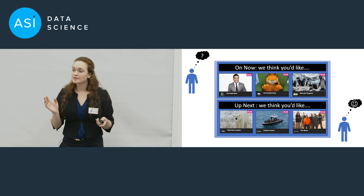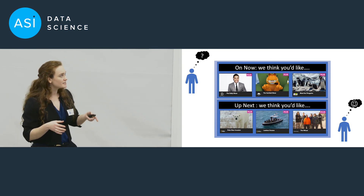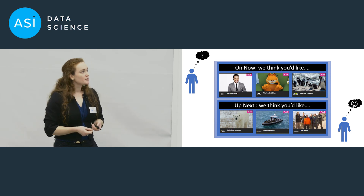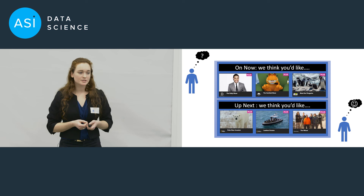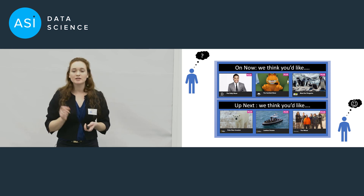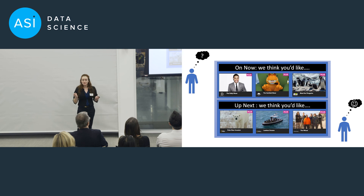So this comes to the end of my talk. Where TV Player is at now is that they have a recommendation engine which they can implement. For any user logging on, you can suggest the top three shows you think they'd like right now, and what's coming up. It should increase user engagement a lot, and the user experience a lot. And I think that's what TV Player is all about — making an excellent viewing experience for its users. Thank you very much for listening.